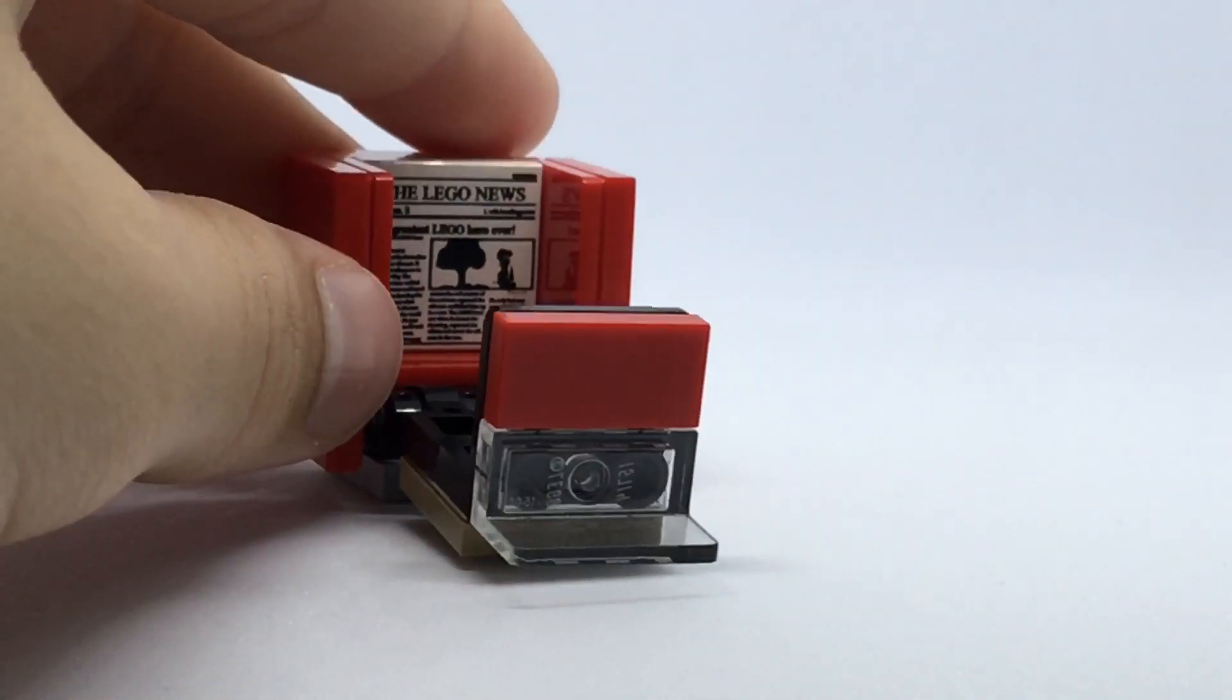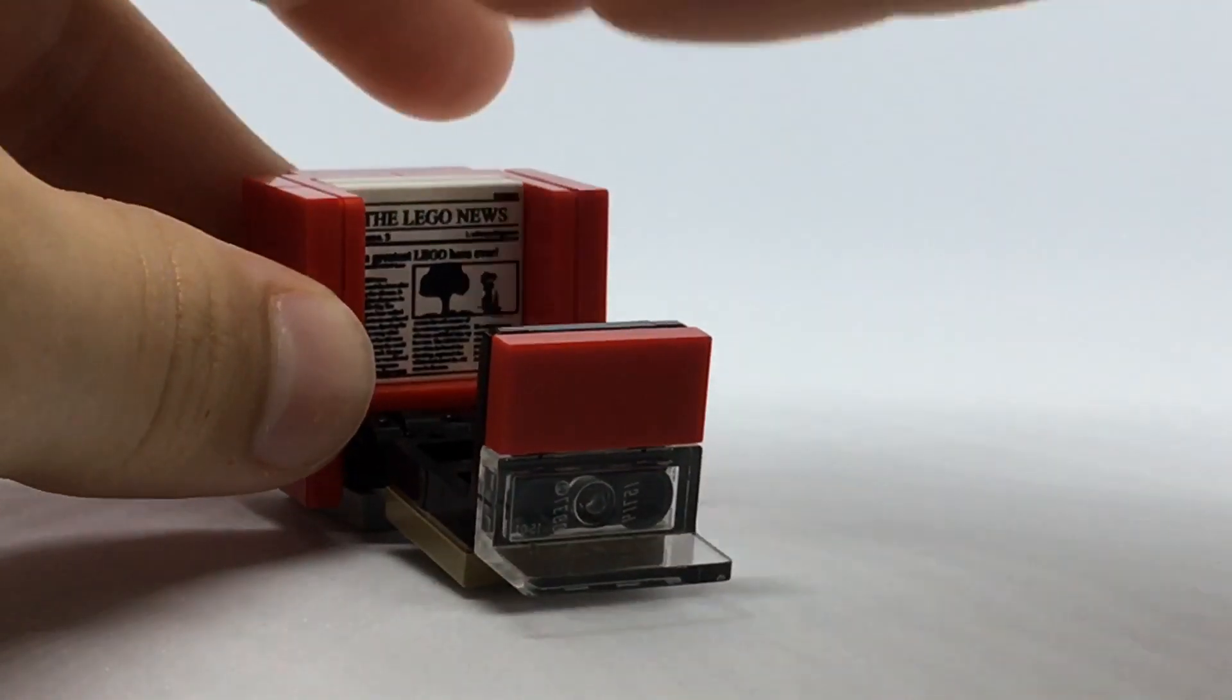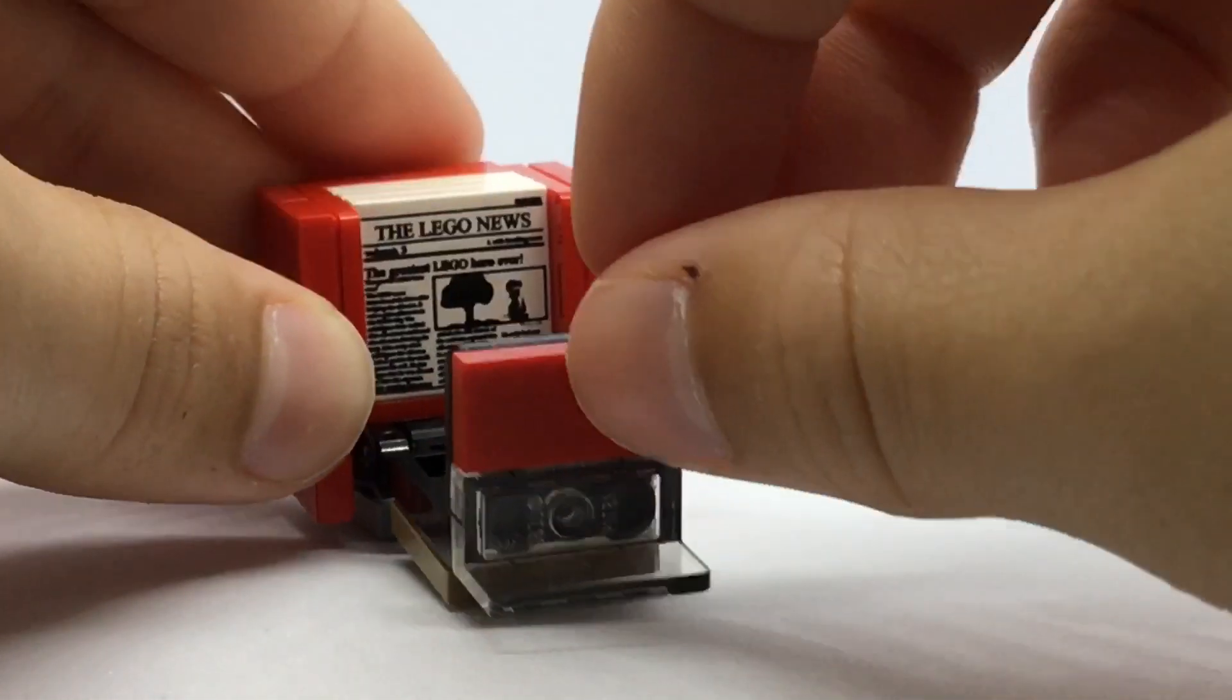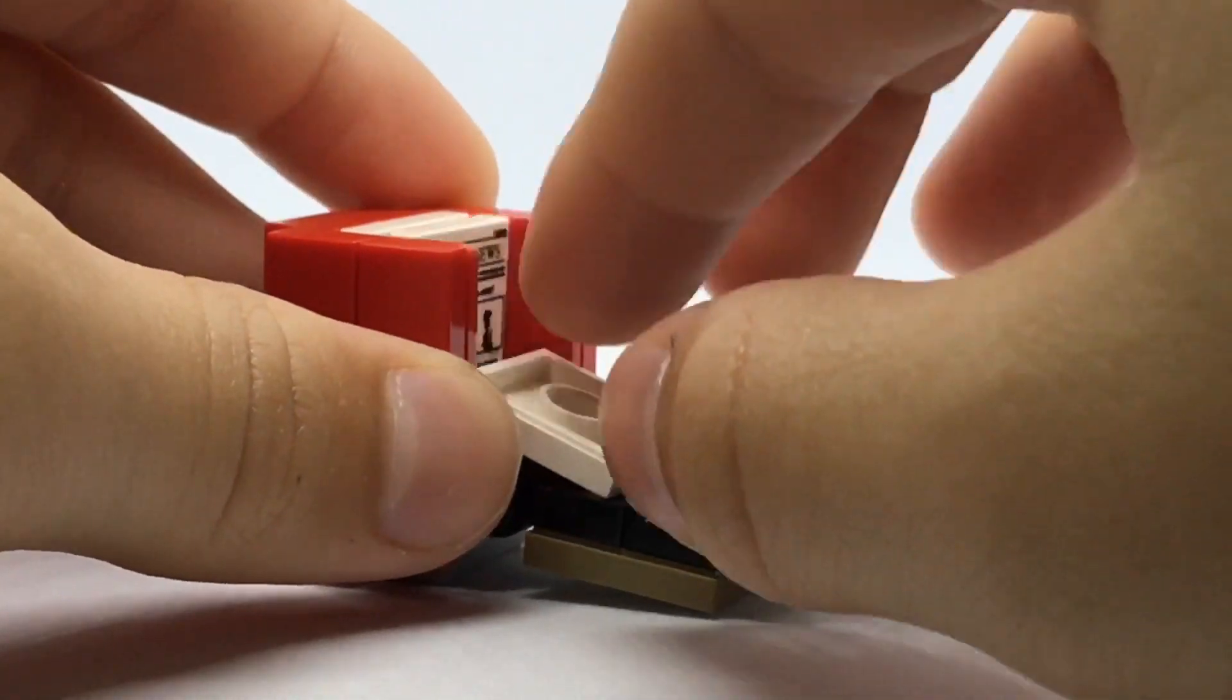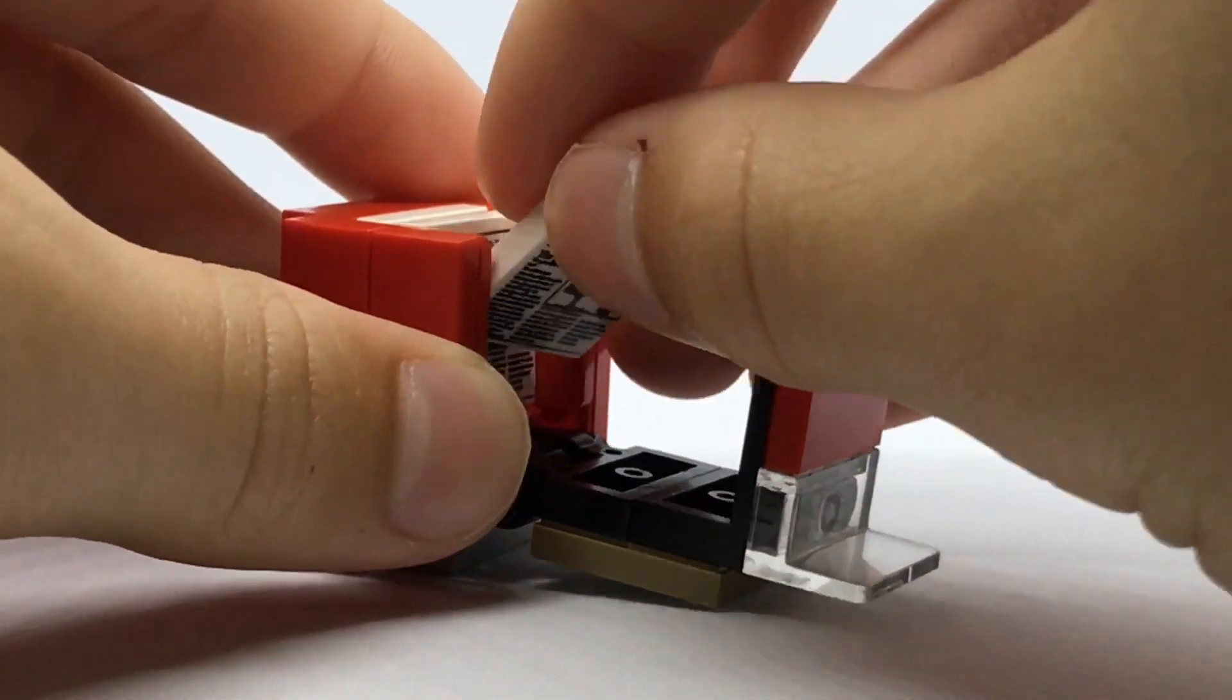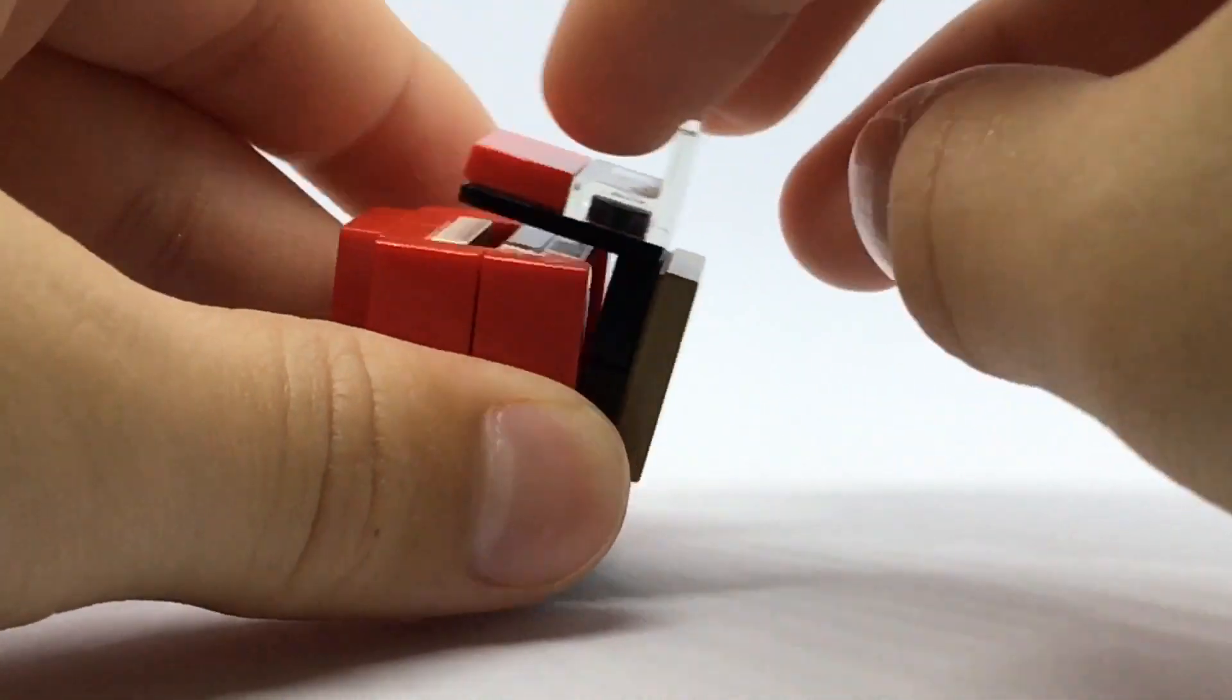Now you can put your Lego newspaper in there, close it, and then your minifigures can just open this up and get the Lego newspapers out. It's really simple.